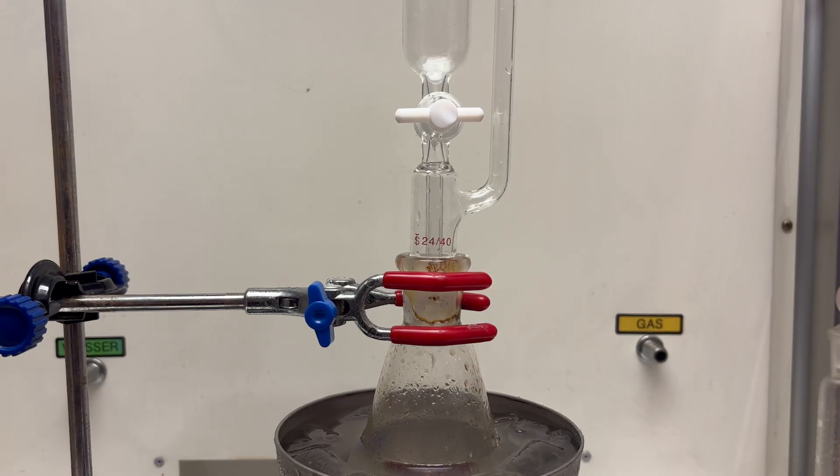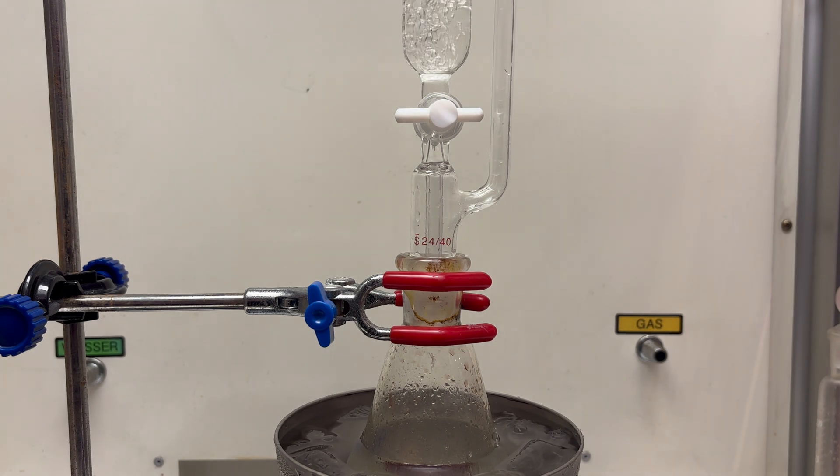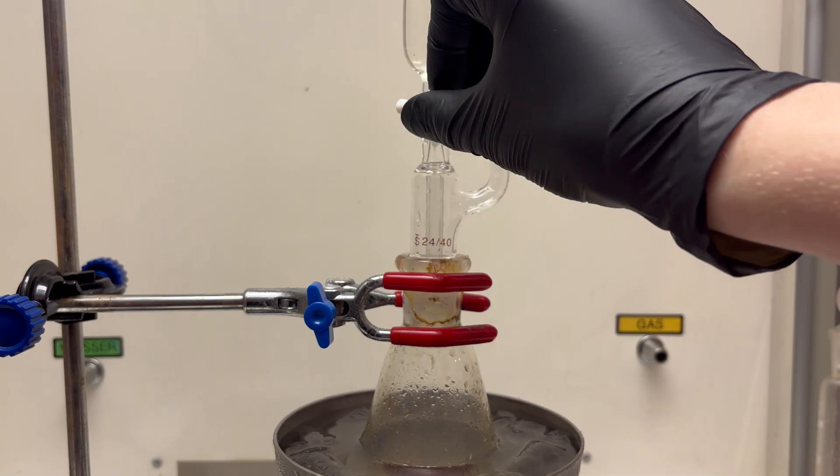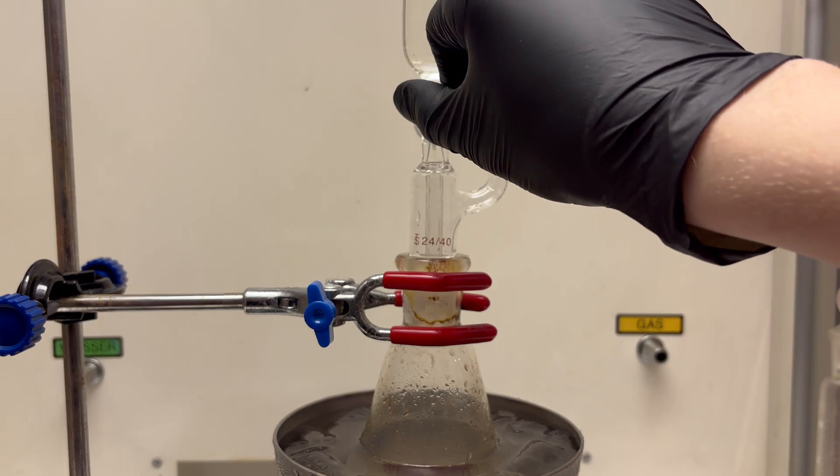After this, 50 milliliters of a 2 molar stannous chloride solution are added into an addition funnel. It's important that the addition of the stannous chloride solution is slow and the temperature is maintained between 0 and 5 degrees Celsius.